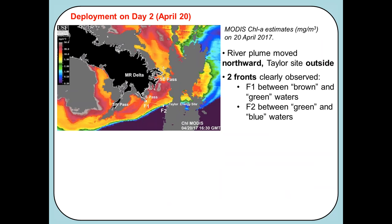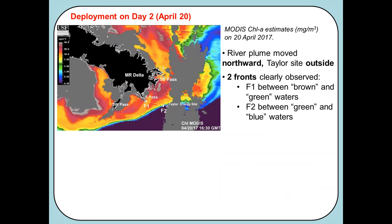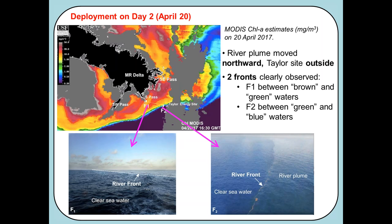Moving on to day two, April 20th: a chlorophyll image shows the Taylor site now slightly outside the riverfront. On our way to the experiment site from Southern Pass, we observed a very well-defined front between the brown brackish waters coming out of the pass and greener waters already standing there. Further on, very close to the Taylor site, there was another sharp front between green waters and blue crystal-clear ocean waters, marked with seaweeds, sargassum, and oil.